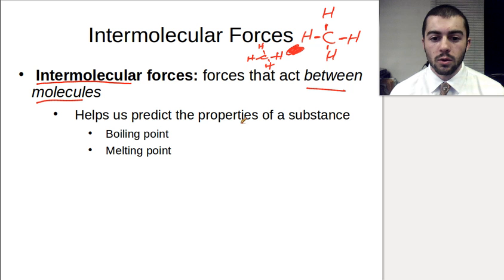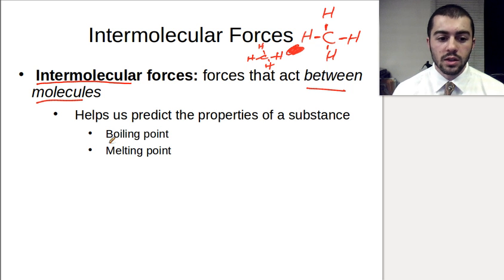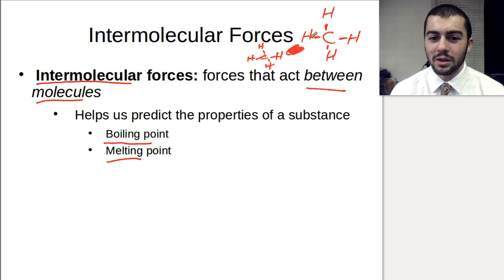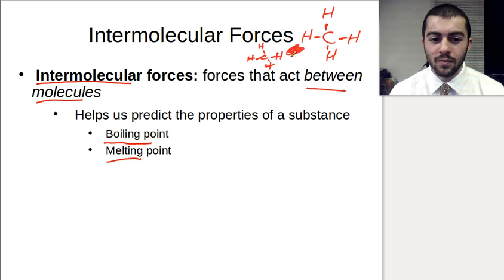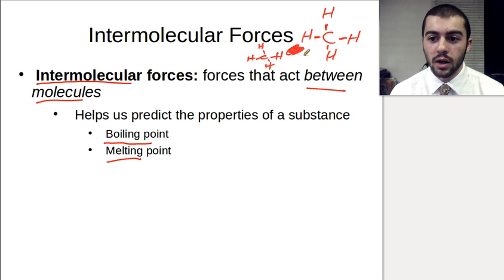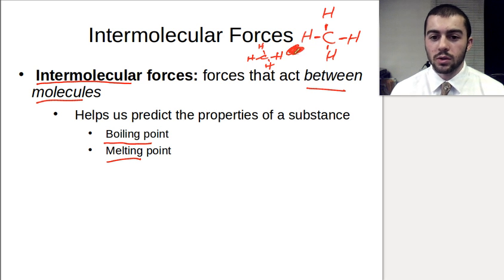These intermolecular forces can help us predict the properties of a substance, such as the boiling point and the melting point. If we have a substance that has really strong intermolecular forces, would the boiling point be high or low? What would happen to the boiling point as the forces between molecules increased? The forces between these molecules being really strong would make it harder for these molecules to boil.